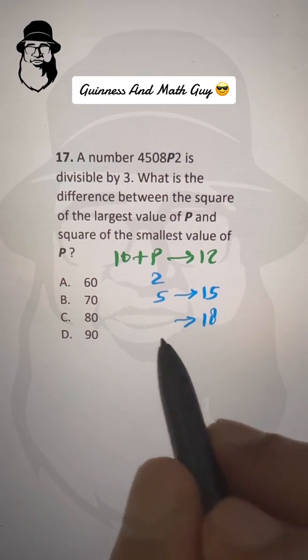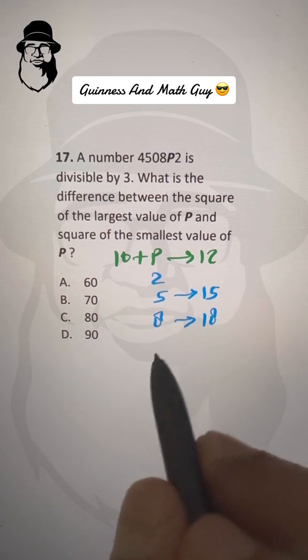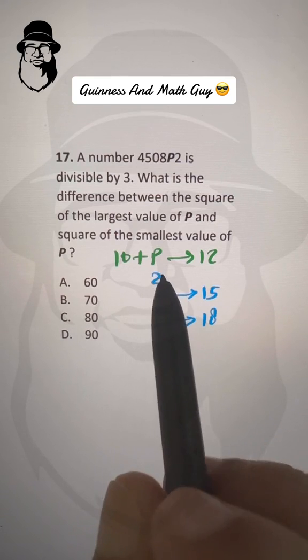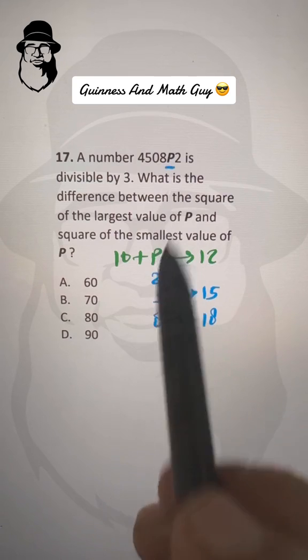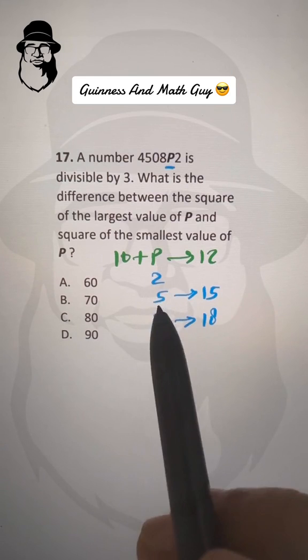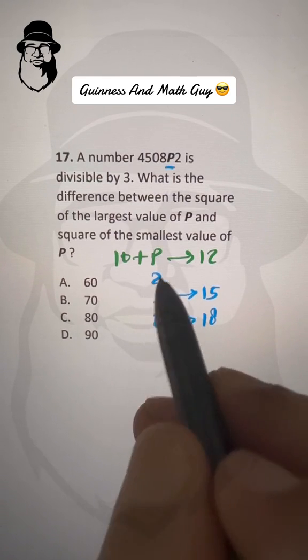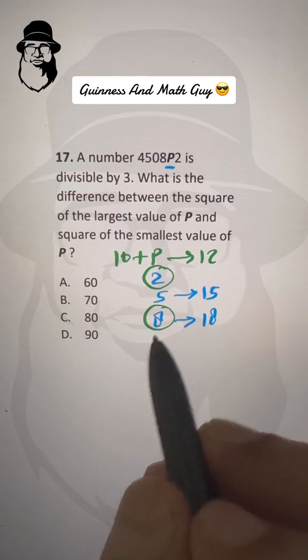And then the next number is 18, which is divisible by 3. So 10 plus what is 18? That is 8. Now, the next number will give us a two-digit number for P, and P is a single digit. So 2, 5, and 8 are the only possible values. The smallest value of P is 2 and the largest possible value of P is 8.